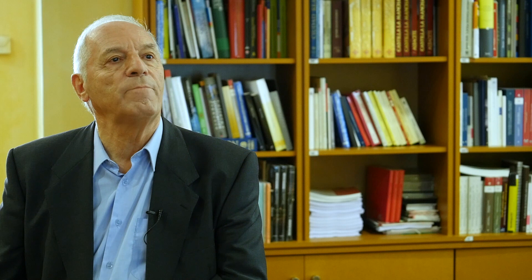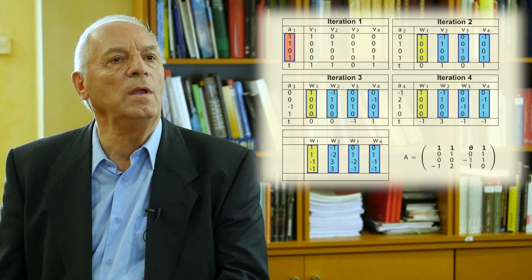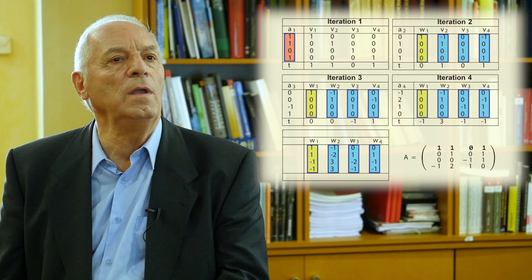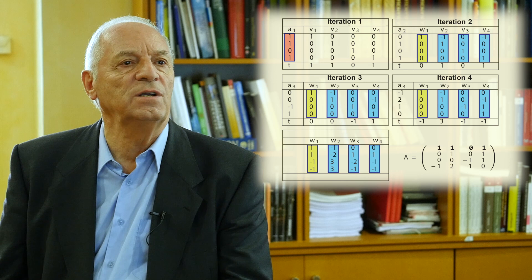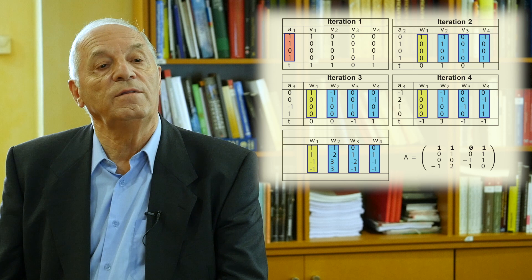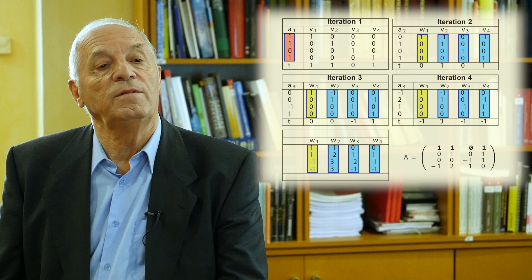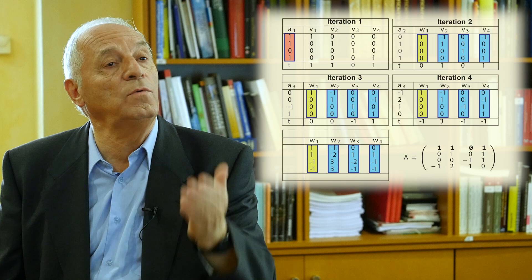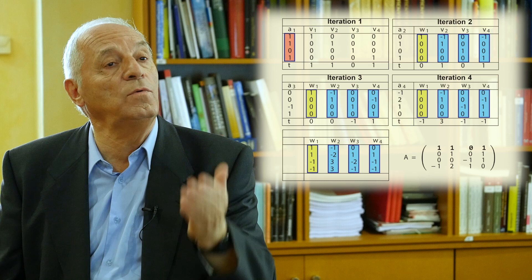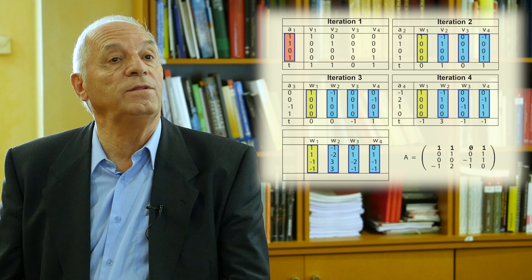The algorithm consists of several steps in which we introduce vector by vector, then we pivot and obtain tables. For example, consider a matrix where the first row is 1, 1, 0, 1. If you introduce the vector 1, 1, 0, 1, then you pivot and obtain another table in iteration 2. Then you introduce the second row, 0, 1, 0, 1, in iteration 2 and pivot, then you introduce the third and pivot, etc. Finally you will get a matrix at the end.